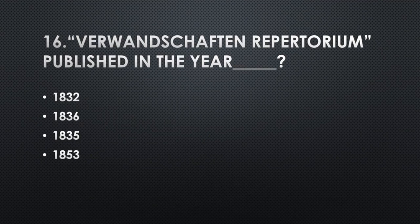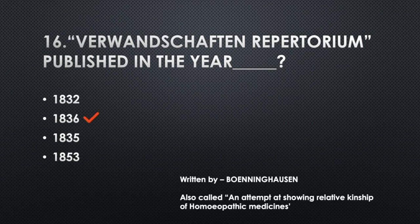Verwandtschafts-Repertorium was published in the year — Option A: 1832, Option B: 1836, Option C: 1835, Option D: 1853. Answer: Option B, 1836. Written by Boenninghausen. Also called 'An attempt at showing the relative kinship of homeopathic medicines.'